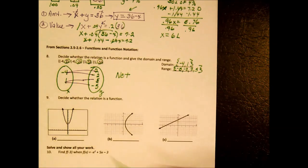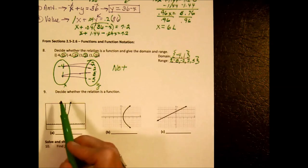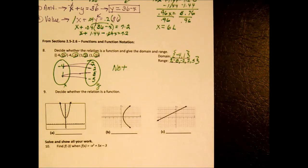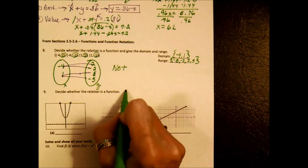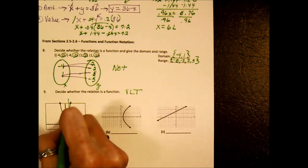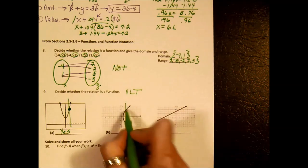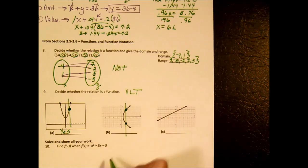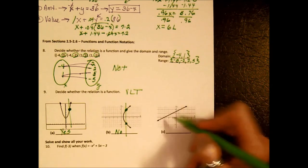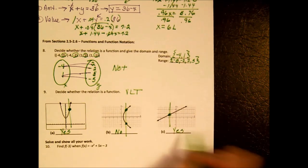Let's look at the graphs in number 9 — decide whether the relation is a function. We use the vertical line test. Drop a vertical line on top of the graph: if it only crosses the graph in one point, yes it's a function. Do it again — it crosses in two points, so no, it's not a function. Do it again — crosses in one point — yes, it's a function. It's the easiest test imaginable.